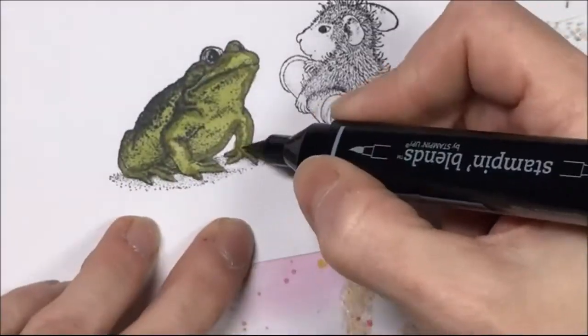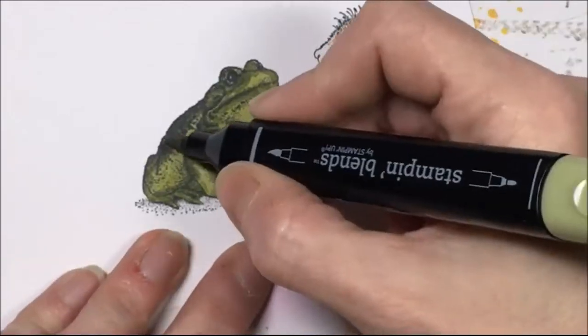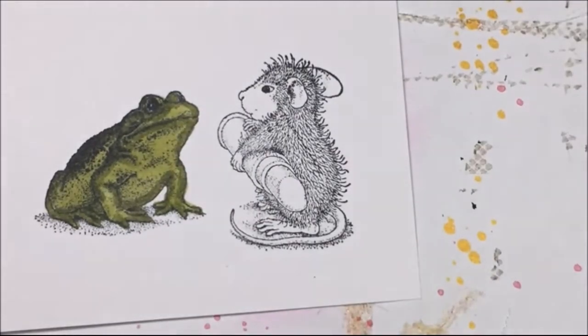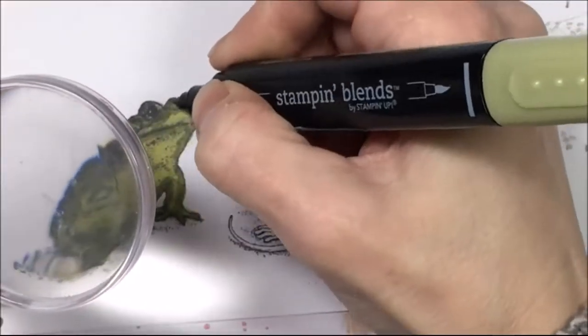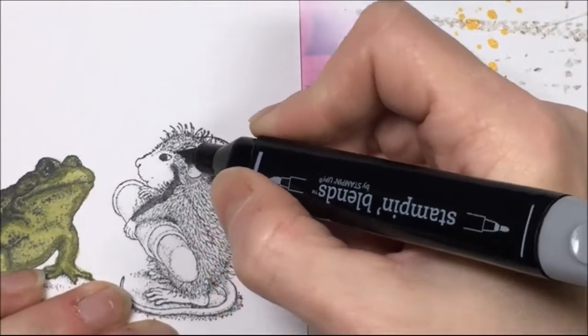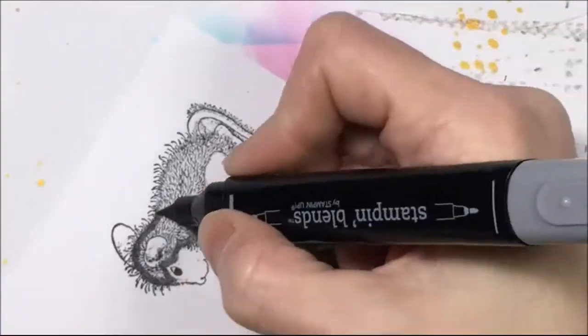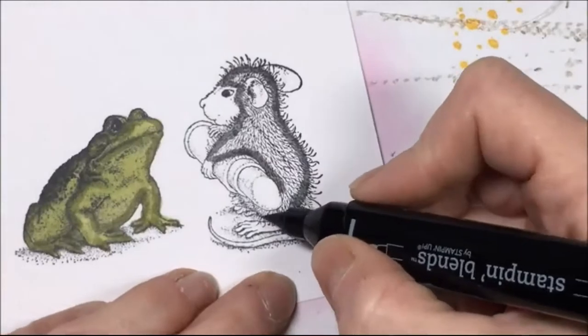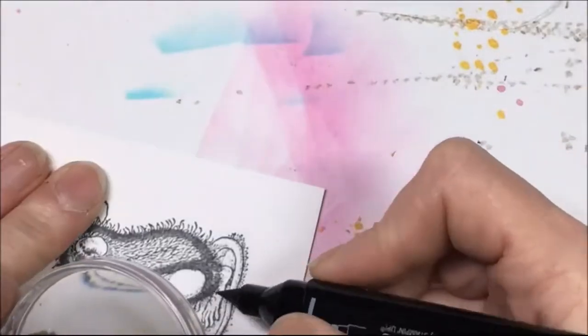I'm going in with these Stampin' Up Stampin' Blend markers and I'm coloring the frog. I got my green there and I'm using a darker green and a lighter green. Then for the mouse I am going to use a gray color. I can't remember the names, but it's a dark gray.